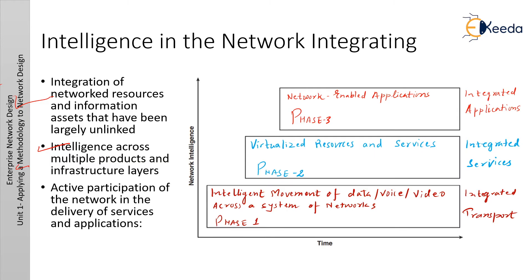The intelligence built into each component of the network is extended network-wide and applied end-to-end. The third feature is active participation of the network in the delivery of services. With added intelligence, it is possible for the network to actively manage, monitor, and optimize services and application delivery across the entire IT environment. The intelligent network offers end-to-end functionality and centralized unified control that promotes true business transparency and agility. With this technology vision, Cisco helps organizations address new IT challenges such as the deployment of service-oriented architecture, web services, and virtualization.